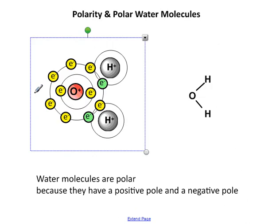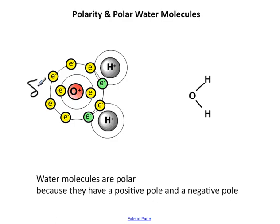So we can put on the side of here we can put delta minus, delta minus, delta plus, delta plus. Here we could do the same thing. And this shows the water molecule which is polar and it's polar because it has a slightly positive pole, in fact two of them, and a slightly negative pole.